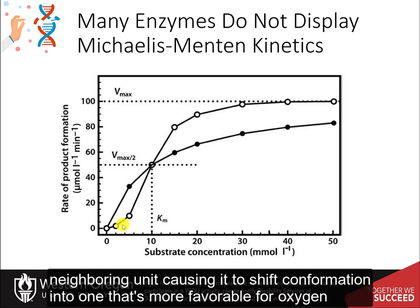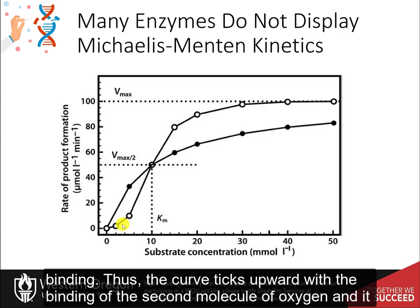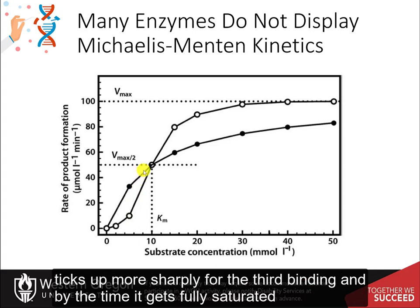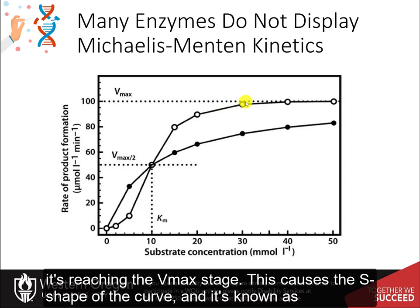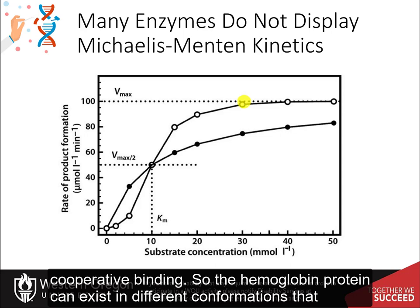When oxygen binds to hemoglobin, there's a dramatic shift in the overall three-dimensional structure of the protein. This shift is what causes the sigmoidal shape of the hemoglobin oxygen binding curve. As oxygen binds to the first subunit, it has lower affinity. However, when it does bind, it causes a conformational change that tugs the neighboring unit, shifting it into a conformation more favorable for oxygen binding. The curve ticks upward with each successive binding event until it reaches Vmax, producing the S-shape — known as cooperative binding.